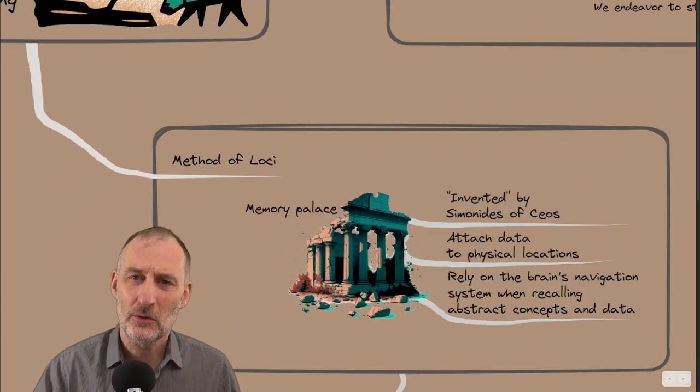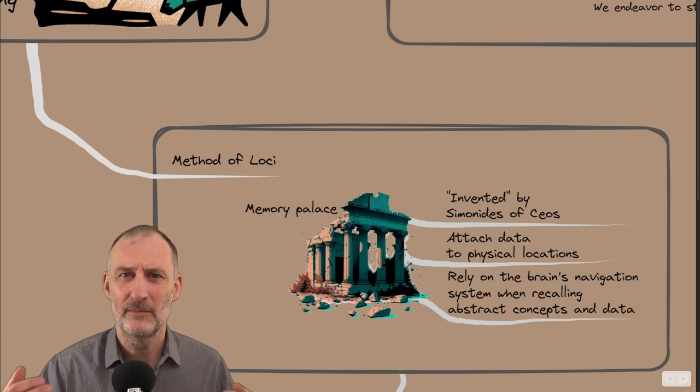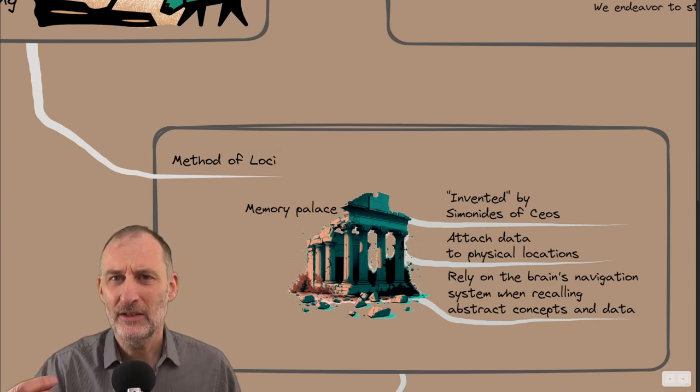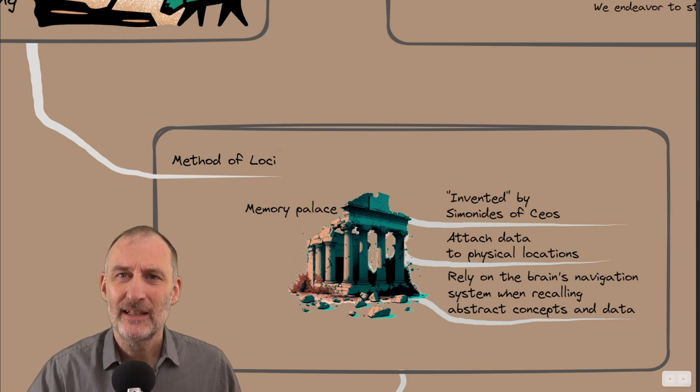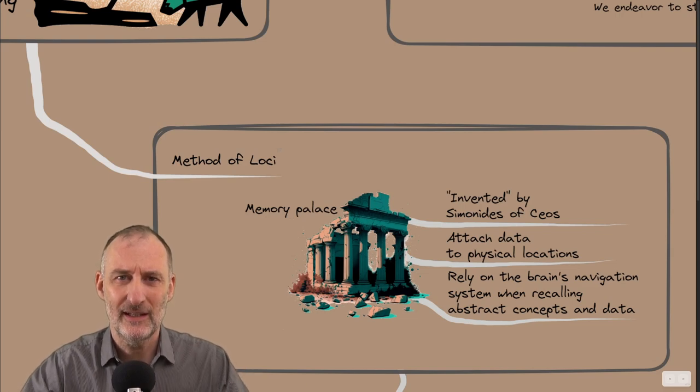The ancient Greeks had this method called the Method of Loci, or the memory palace. According to the legend, Simonides of Ceos, a Greek poet, was attending a dinner, a banquet at a large hall, and the hall collapsed.